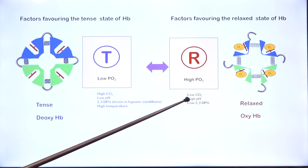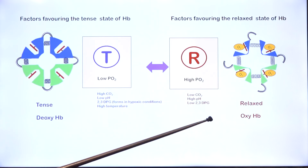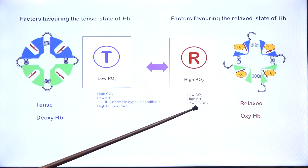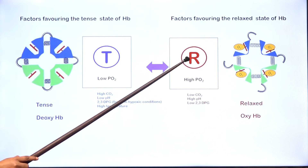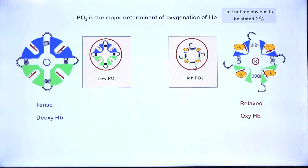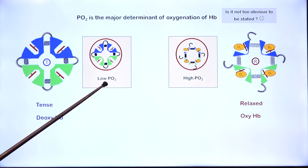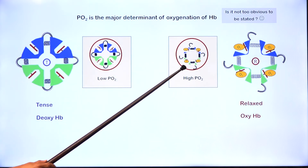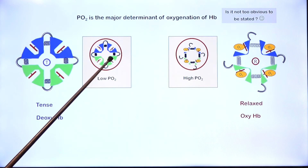Whereas conditions which prevail in the lungs — low carbon dioxide after it has been expelled, higher pH, and low 2,3-diphosphoglycerate — favor the relaxed state of hemoglobin. Of all these factors, partial pressure of oxygen is the major determinant of whether hemoglobin exists in the oxy or deoxy state.